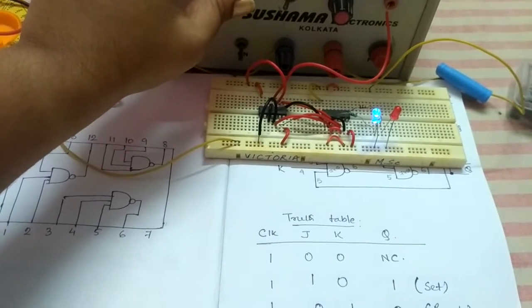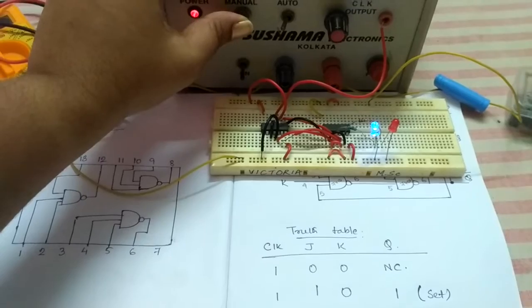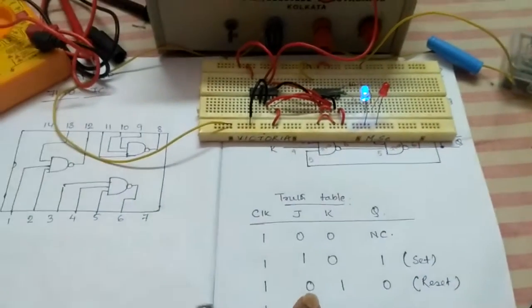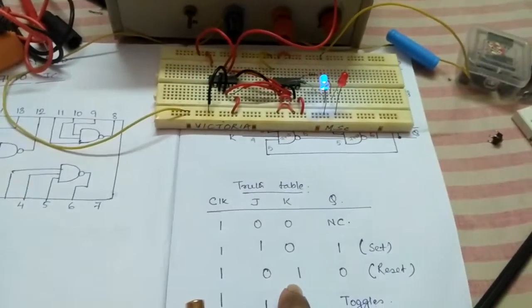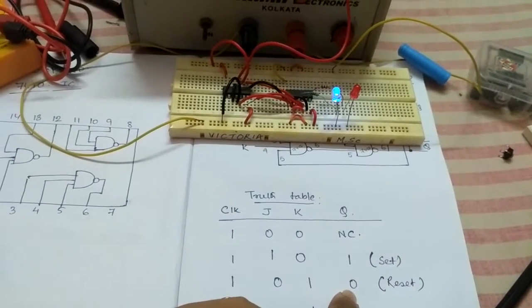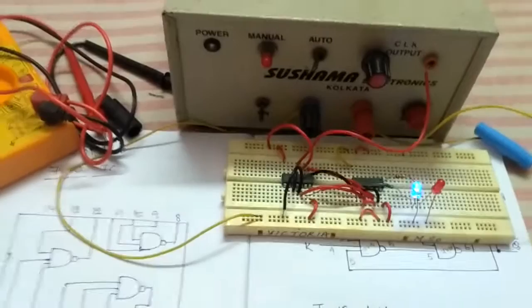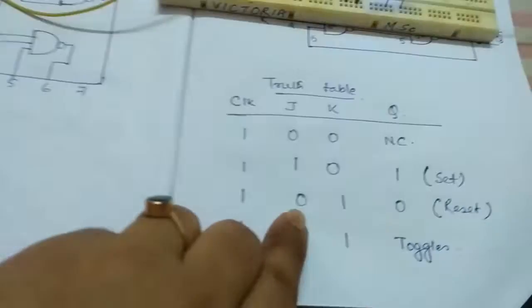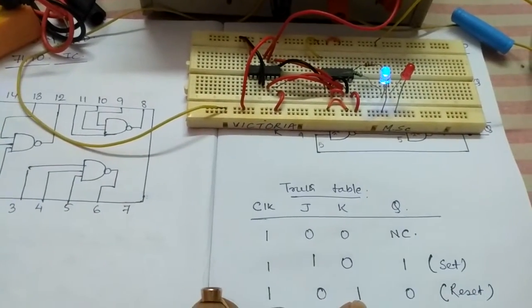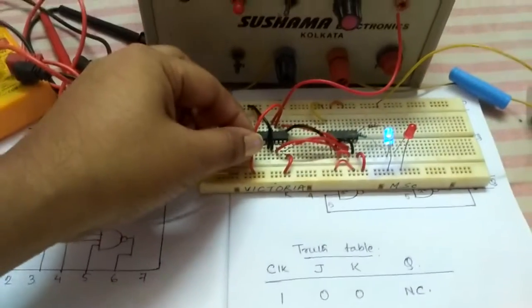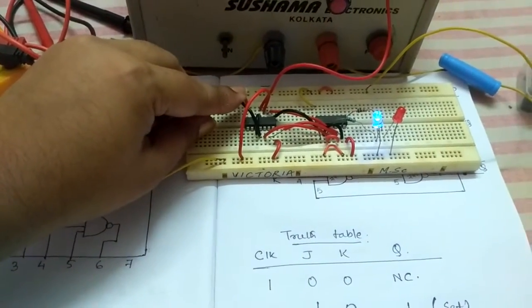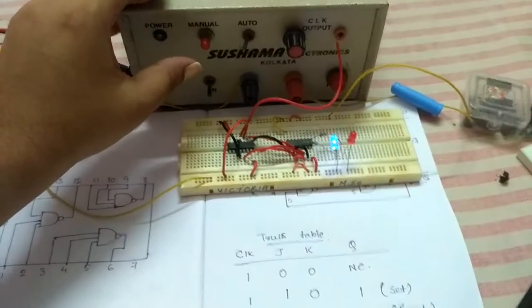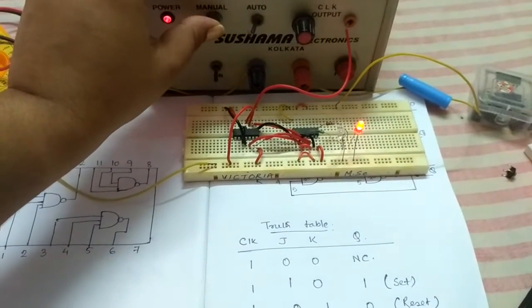This is the set condition of JK flip-flop. Moving on to the third part, making J as 0 and K as 1, your Q should become 0, that is reset. I made this condition J zero and K one. This is my J that is made to zero and this is my K that is made to one. Now if I apply a clock pulse, it goes to reset condition, that is it will become zero.